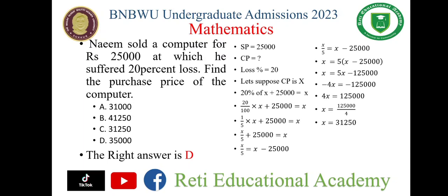It will be 4X is equal to 125,000. When we divide both sides by 4, we get X equal to 31,250. Looking at the options, this is option number C. Option D is not the right answer — option C is the right option for this problem.